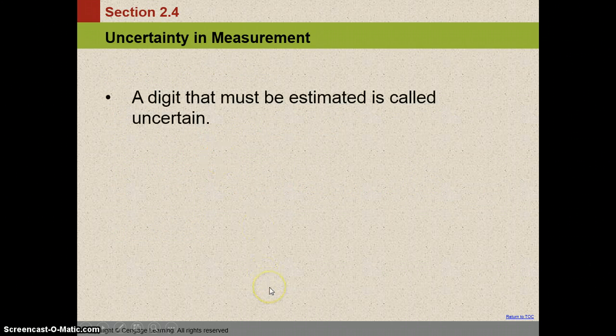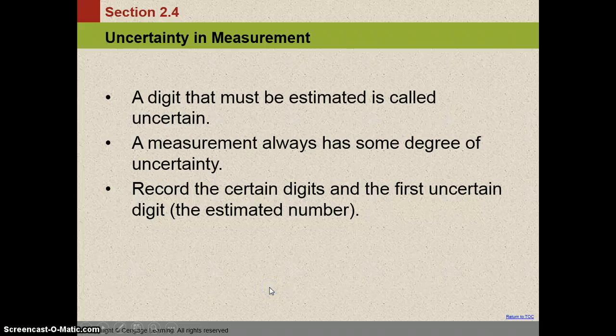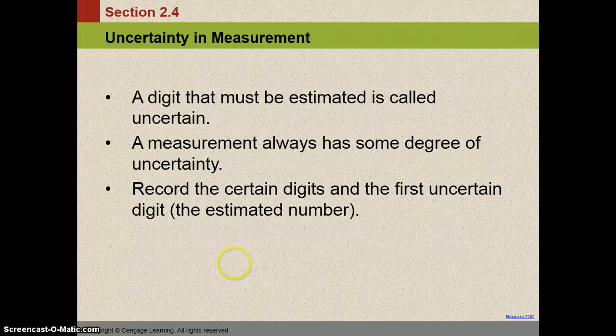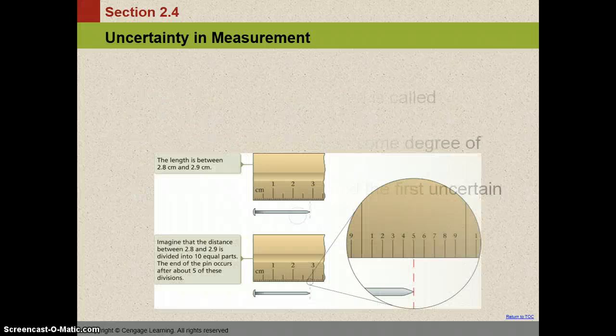So it starts in section 2.4. Uncertainty in measurement. Every time you make a measurement, there's always some degree of uncertainty. And that's because the digit that you measure to has to be estimated. The last one has to be estimated. And I'll show you an example of that.